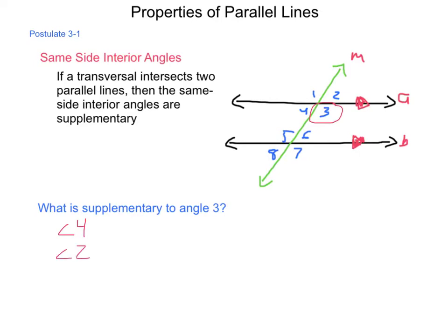Angle 2 would also be supplementary, because it makes a linear pair with angle 3. Based on Postulate 3.1, we can now also conclude that angle 6 is supplementary, because it is the same side interior angle. And since angle 6 and angle 8 are vertical angles, angle 8 would be supplementary as well. So we have four angles that are supplementary to angle 3.